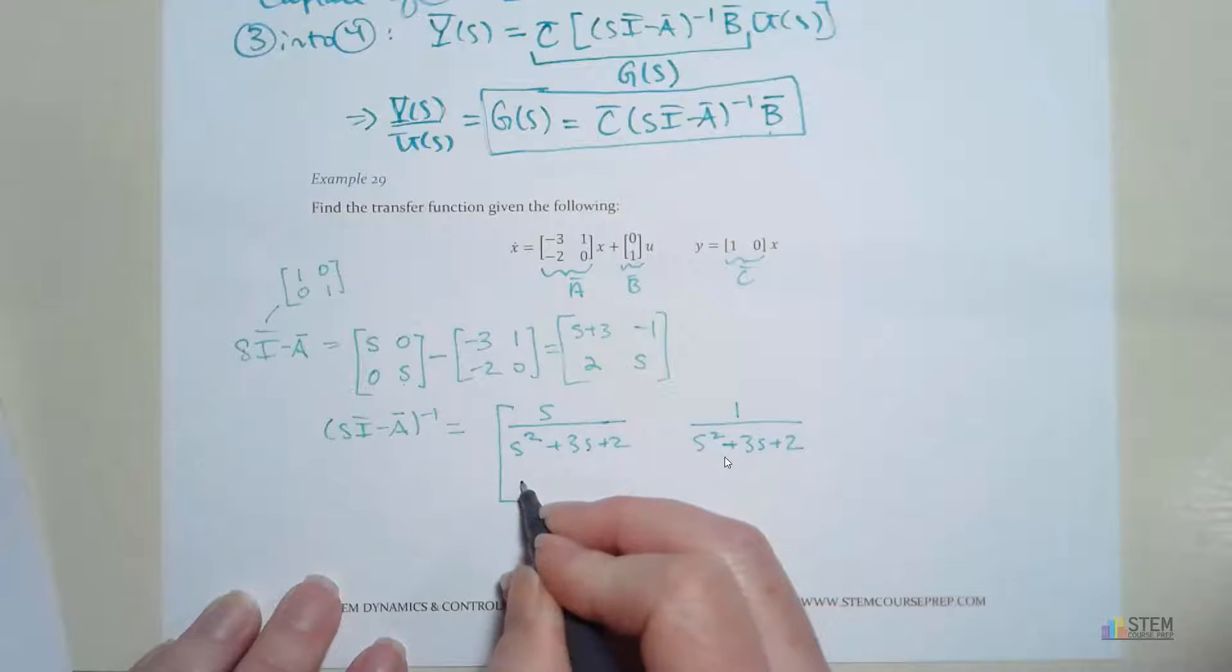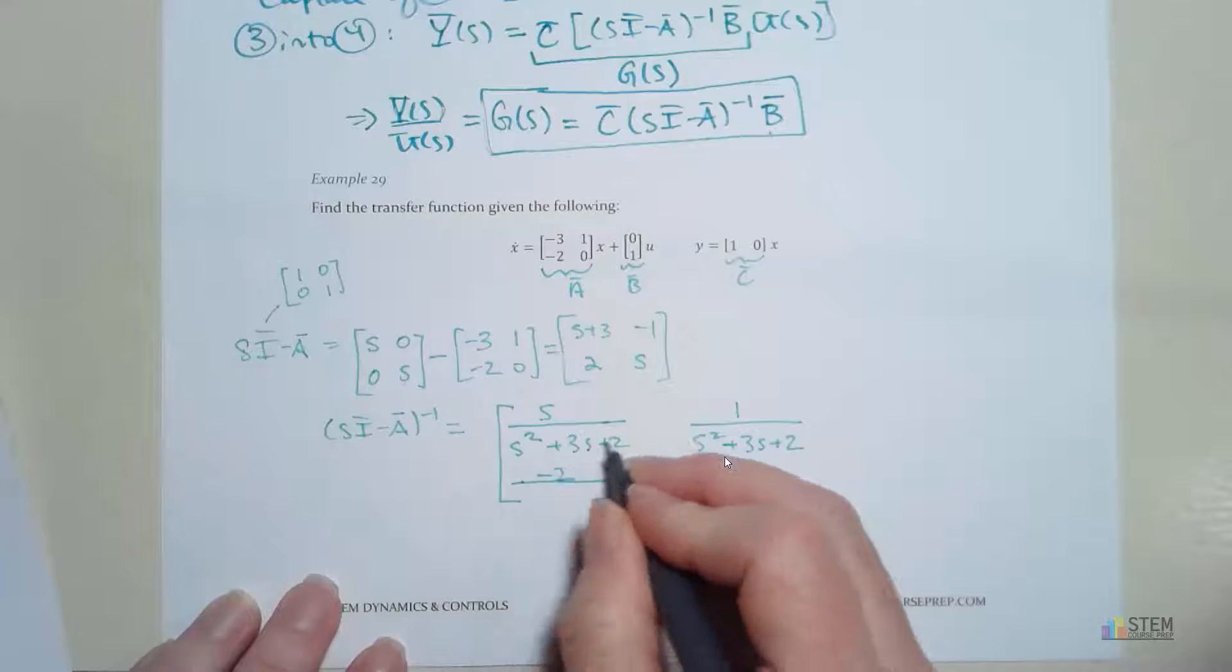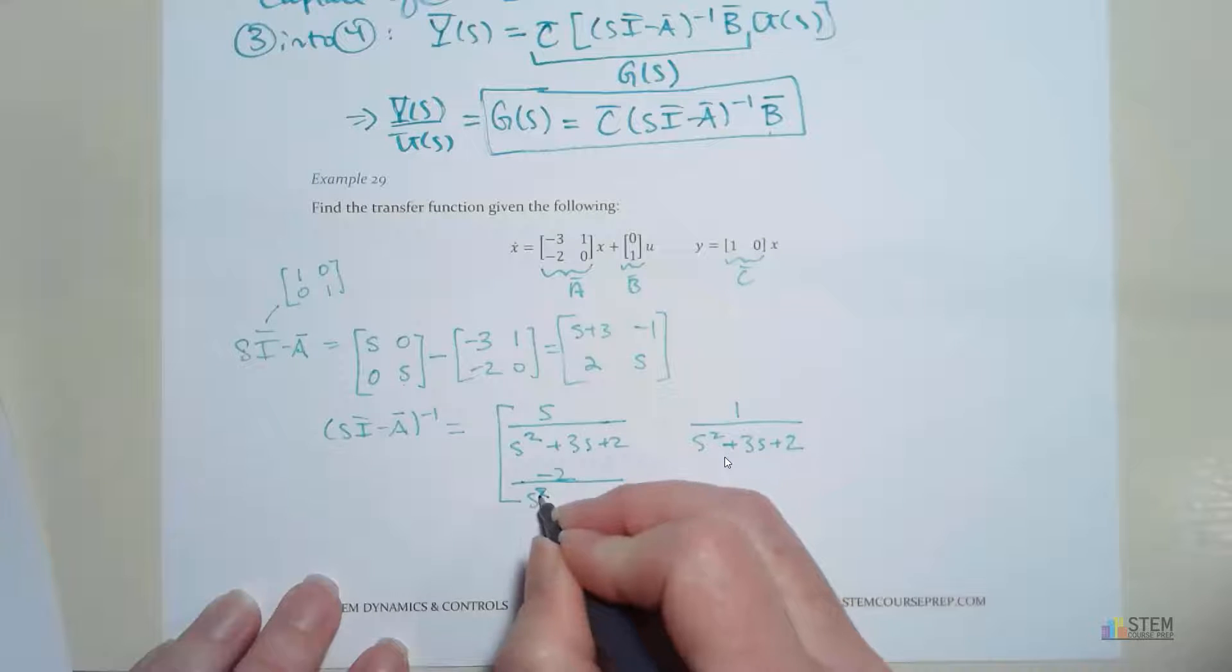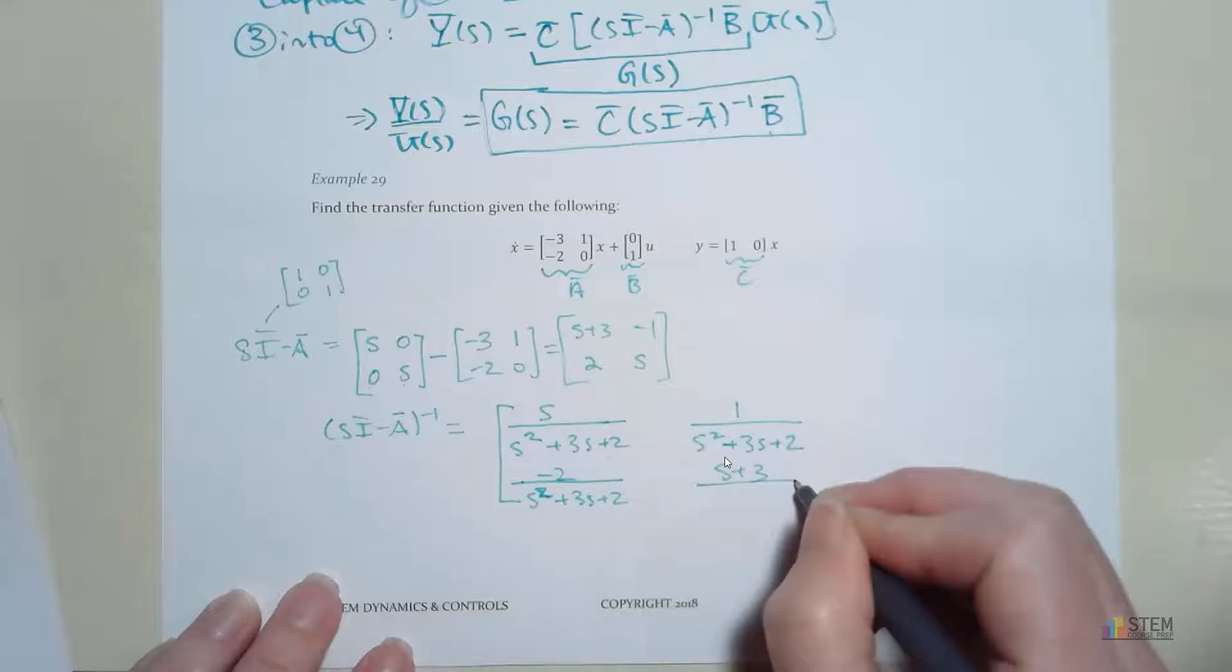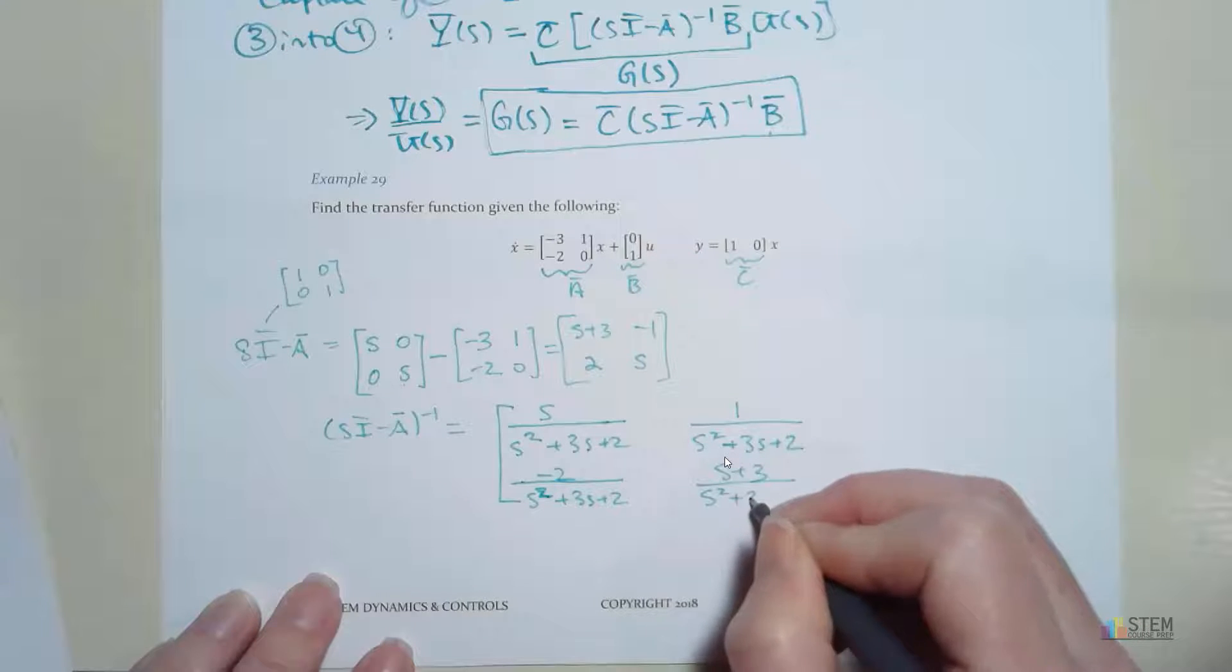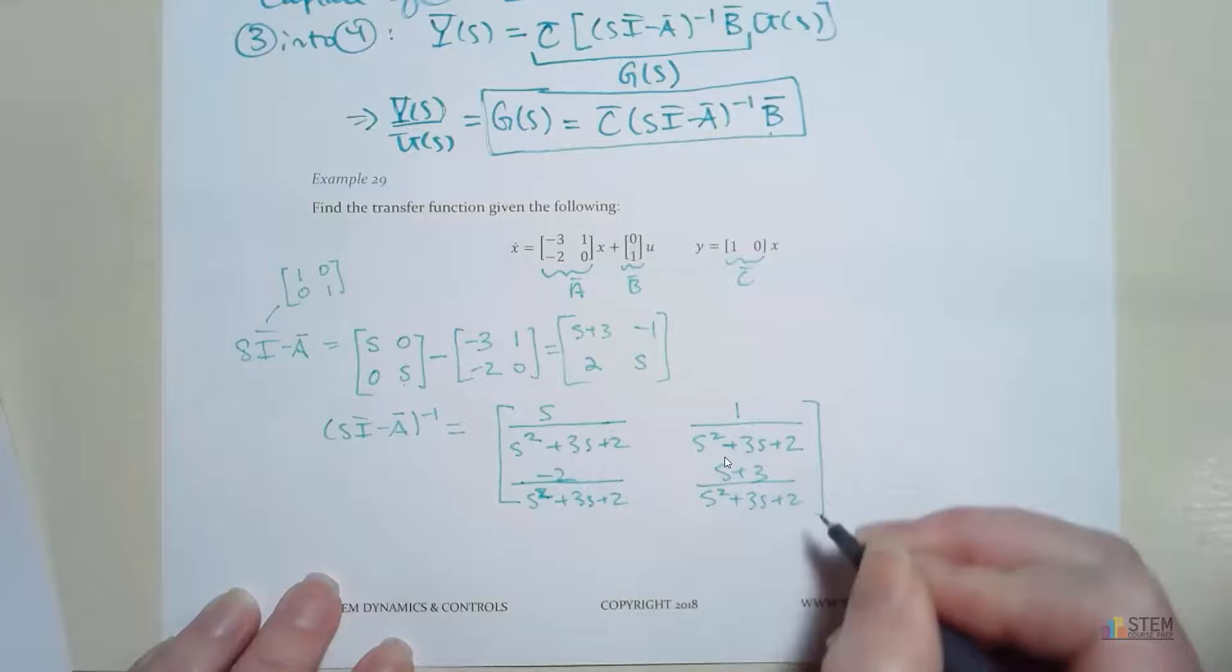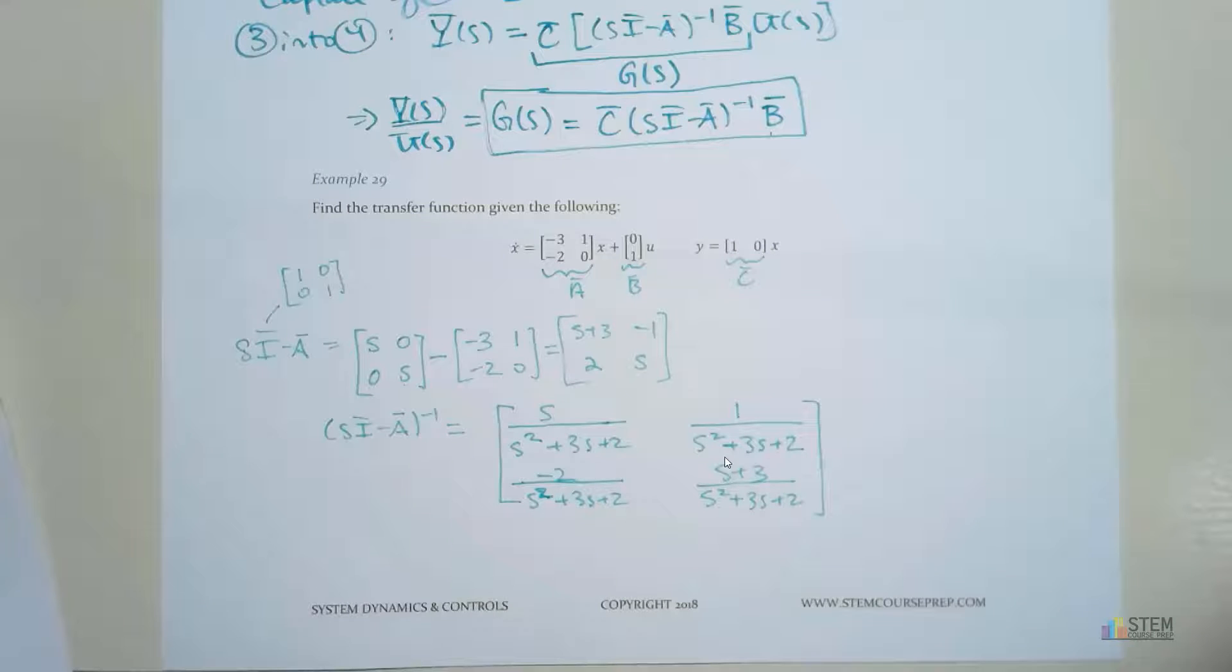And then down here in the second row, we're going to have negative 2 over that same denominator, so s squared plus 3s plus 2. And then finally, (s plus 3) over (s squared plus 3s plus 2). So that's what you get for your inverse.